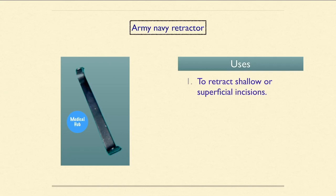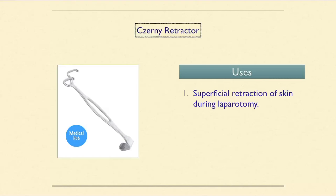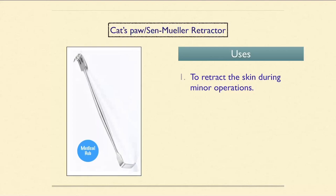The Army Navy retractor is used to retract shallow or superficial incisions. The Journey retractor is used as a superficial retractor of skin during laparotomy. The Cat's Paw retractor is used to retract the skin during minor operations.